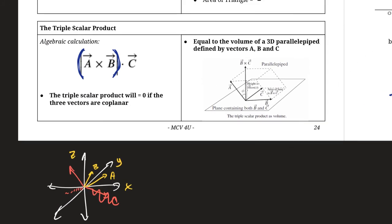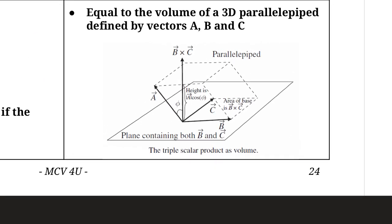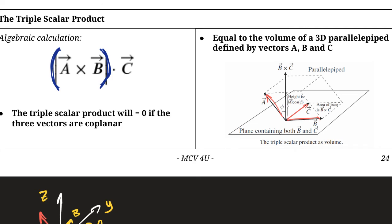The triple scalar product — A cross B dotted with C — also equals the volume of a 3D parallelepiped, which is like a general rectangular prism where the top can be shifted, resembling a rhombus in three dimensions. The volume of that shape equals the triple scalar product of the three vectors forming its edges. These last two applications are bonus information — they won't be on the exam, but they may help you in the future.